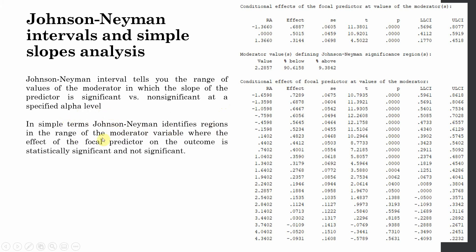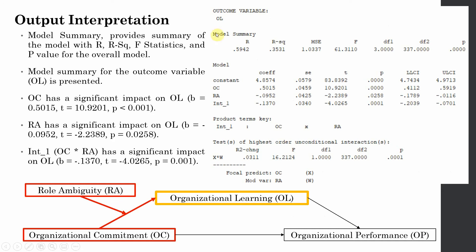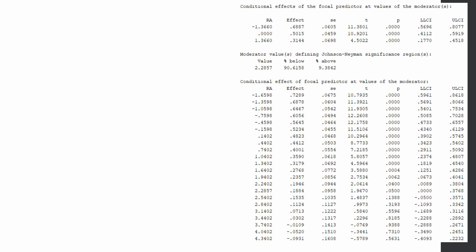In simple terms, Johnson-Neyman identifies regions in the range of the moderator where the effect of the focal predictor on the outcome is statistically significant and not significant. The effect is significant up until this point. These values for the moderator do not cause a change in the focal predictor relationship. Note that two relationships are being moderated. The average level of moderator is 0.5015 — this Johnson-Neyman output is for the focal outcome organizational learning and focal predictor organizational commitment, with RA as moderator.